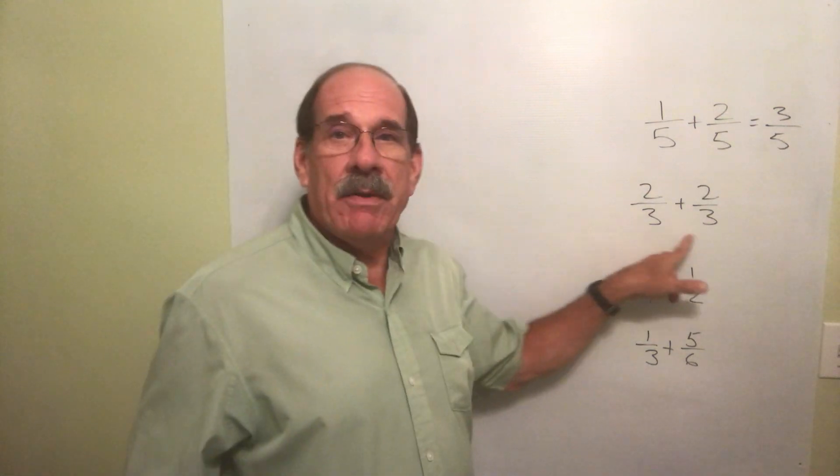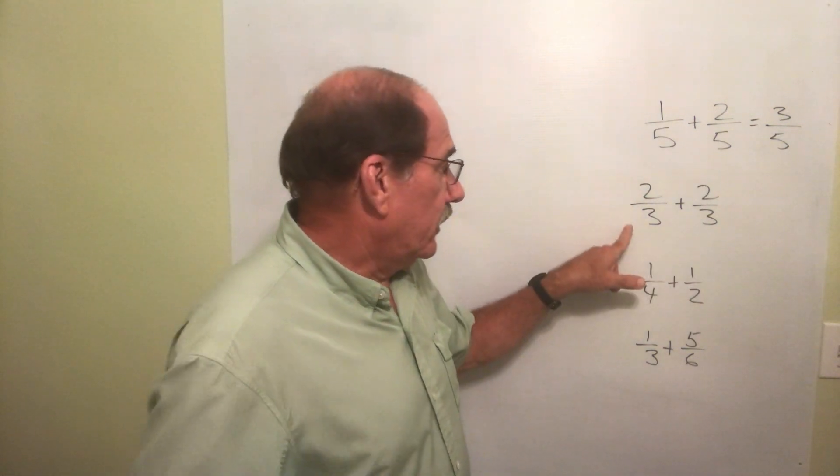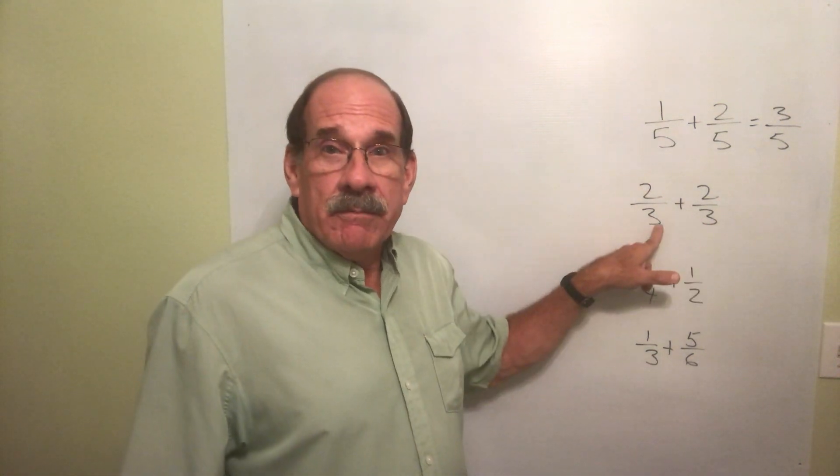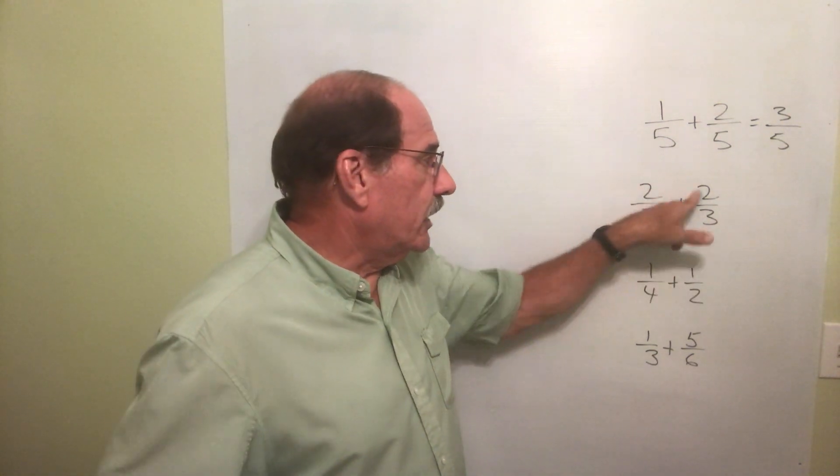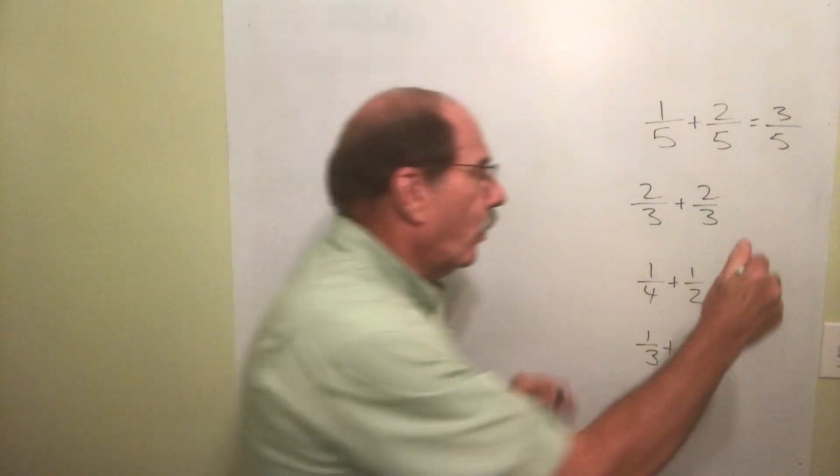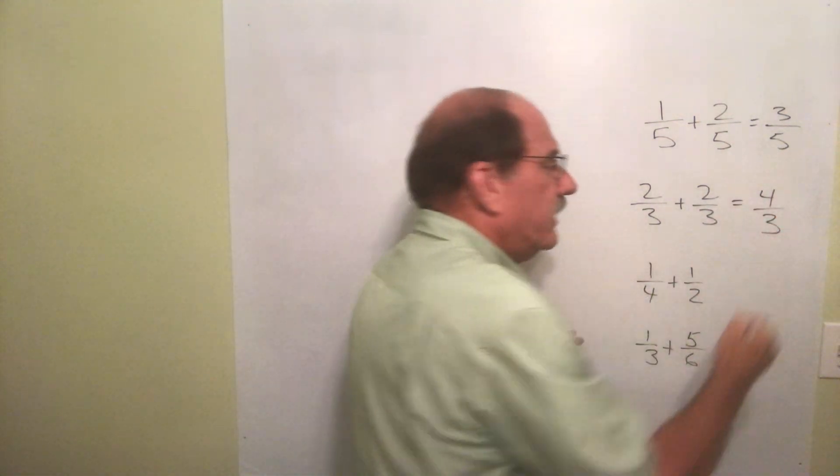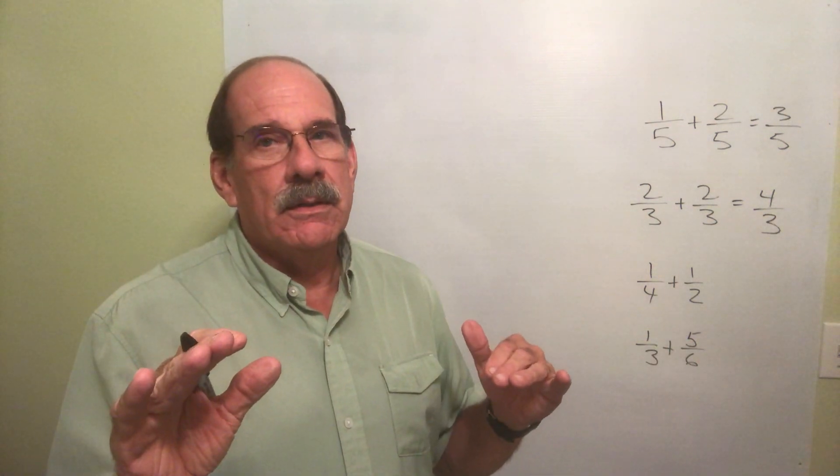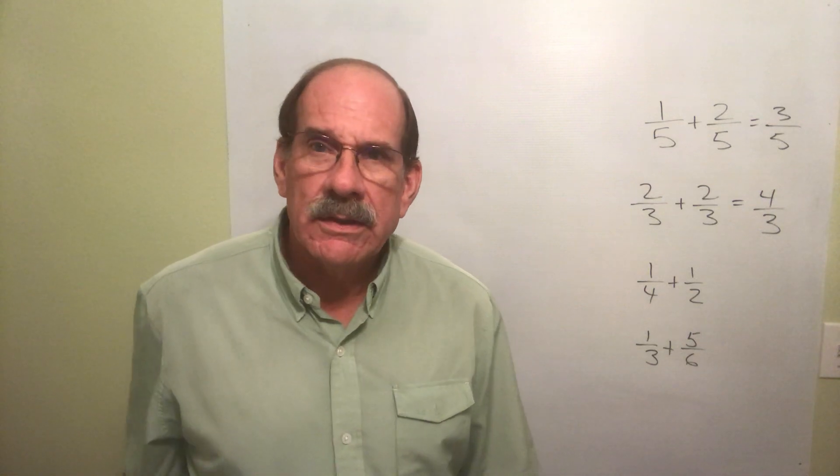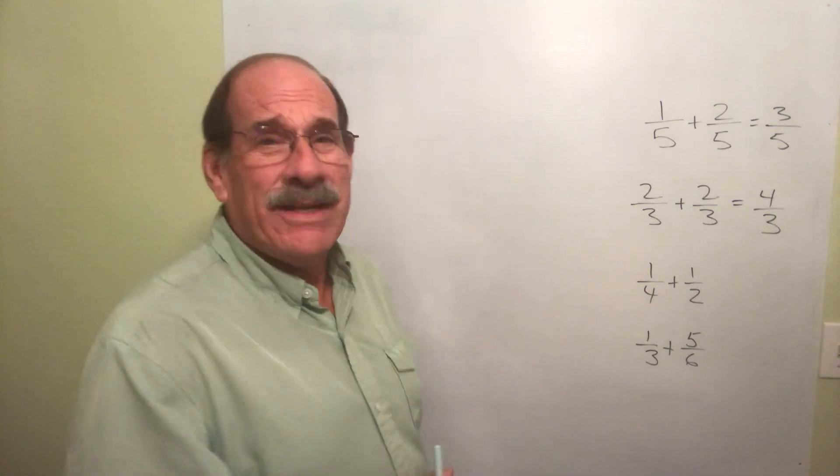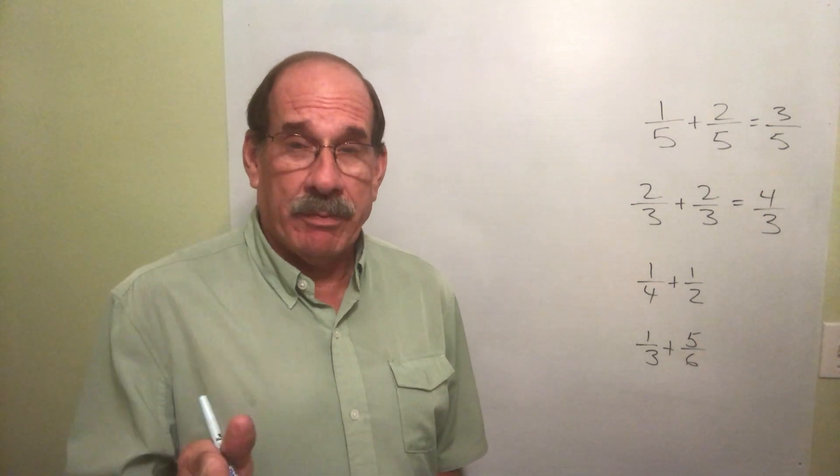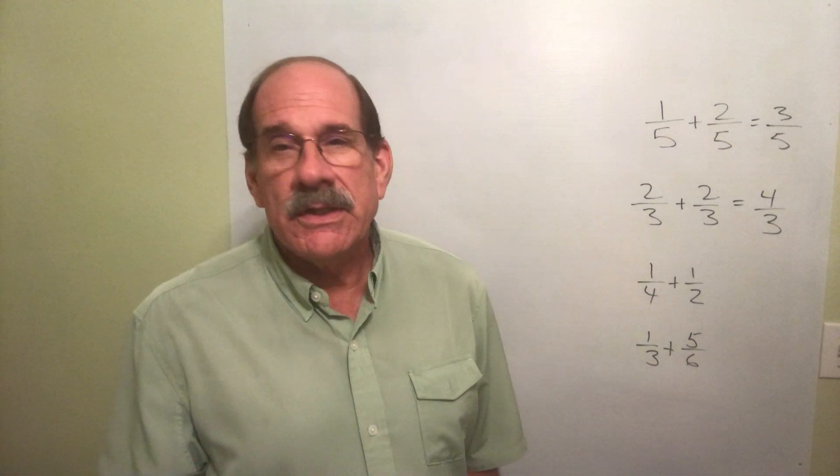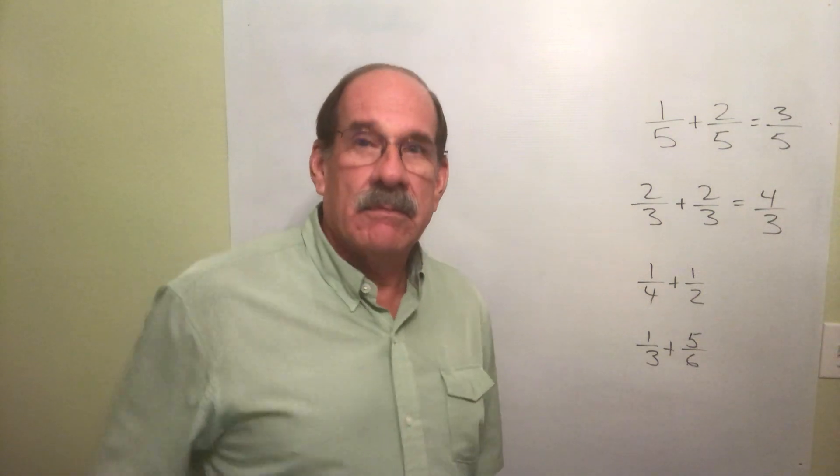What about this? Hey, we have the same denominator: two-thirds plus two-thirds. Let's see. Same at the bottom, add the top numbers. Two plus two equals four. Keep that same bottom number: four-thirds. There we go. There's a problem. What's the word for that? That's an improper fraction, because it's improper. We can't leave it that way. You must convert that to a mixed number.